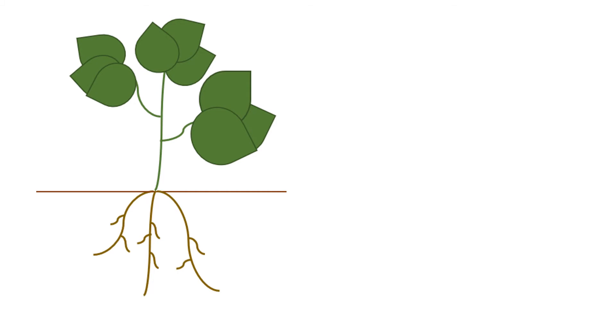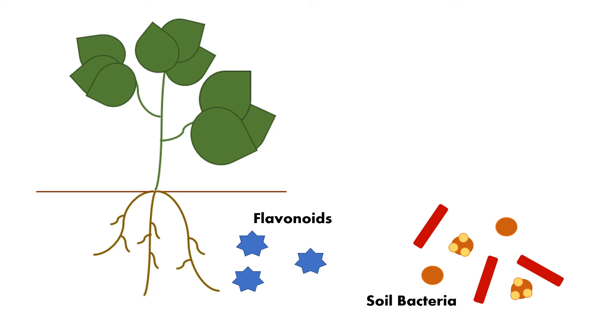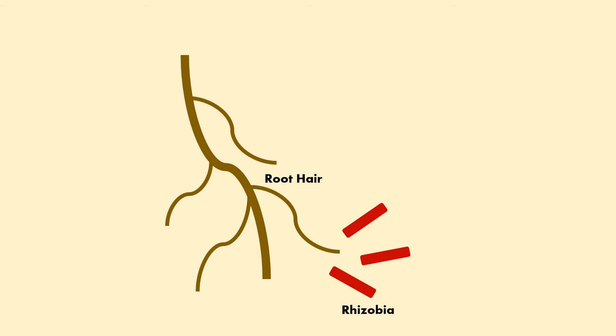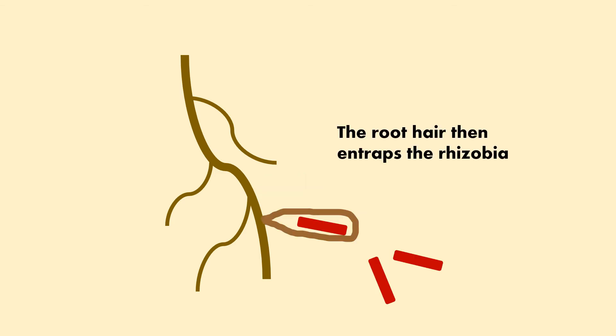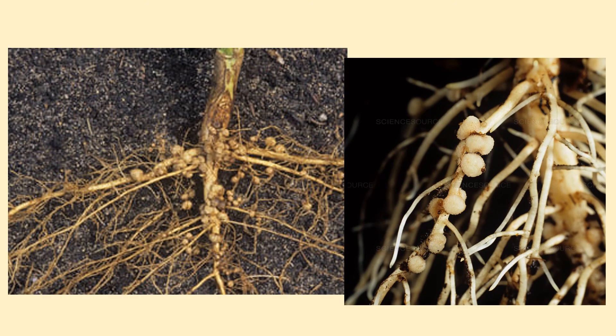In this process, the legumes release flavonoids from their roots that call the soil bacteria towards the root hairs of a legume plant. Next, the rhizobia move towards the root hairs and begin to attach. Once attached, the root hair then begins to curl around the rhizobia and trap it within the root hair. At this point, the bacteria is then able to move down the root and create an infection thread that forms the final nodule that contains the bacteria.